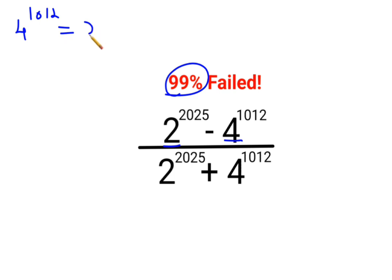4 can be written as what? 2 raised to 2, the whole raised to 1012. Okay.